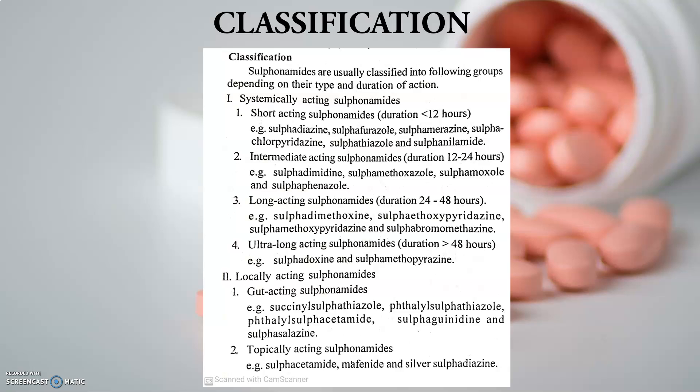The next and biggest classification is systemically acting sulfonamides. Depending upon the duration of action, they are divided into four categories: short acting, with a duration of less than 12 hours; intermediate acting, with a duration of 12 to 24 hours; long acting, with a duration of 24 to 48 hours; and ultra-long acting, with a duration of more than two days.